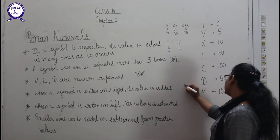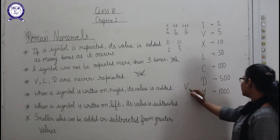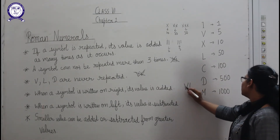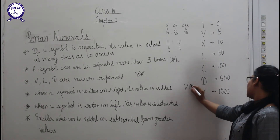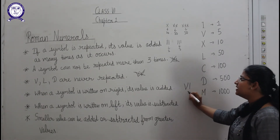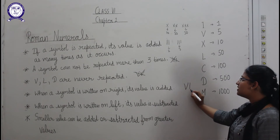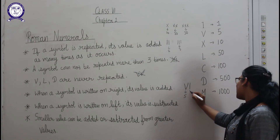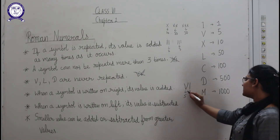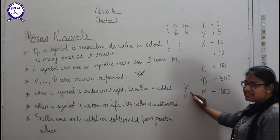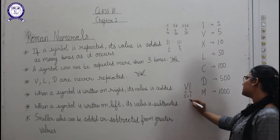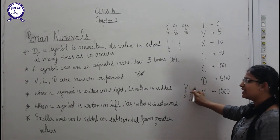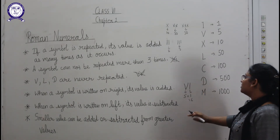When a symbol is written on the right side of another, its value is added. For example, if I write I on the right side of V, the values are added: V is five and I is one, so five plus one equals six. The symbol for six is VI.